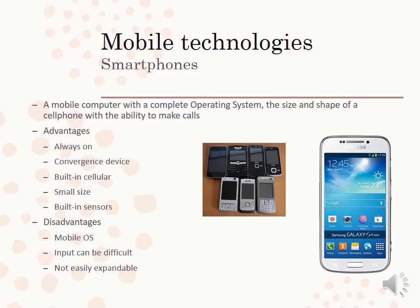Smartphones are actually a complete computer — a little mobile computer with a complete operating system. They have the size and shape of a cell phone and can make calls, but they also do a whole lot of other computing functions. The advantages are they are always on. It is what we call a convergence device — an important buzzword — meaning that it combines the abilities of many devices into one. So your smartphone has a GPS, you can make calls, search the internet, and even type out documents.